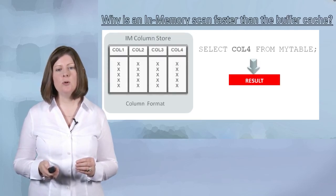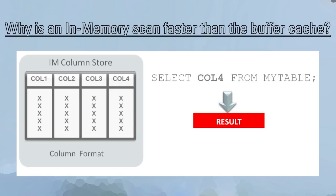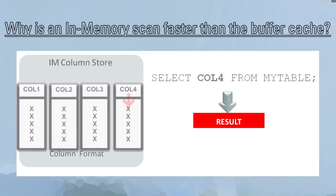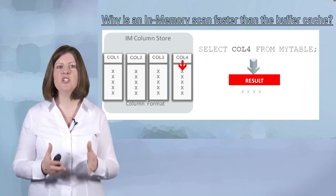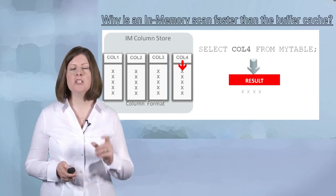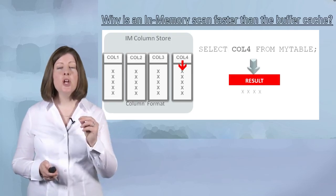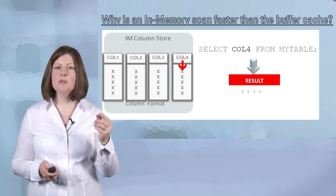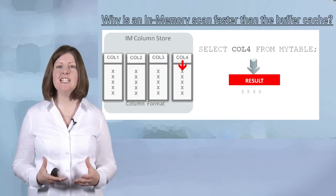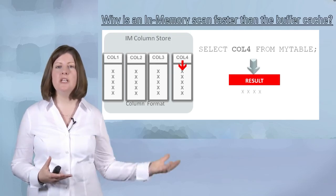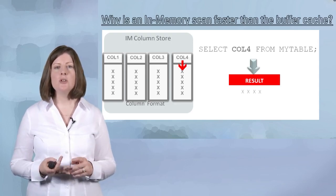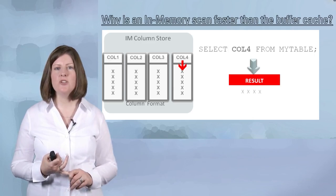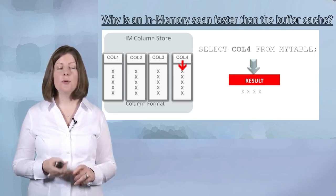If we execute the same query against the table in a column format, inside the column store each column is stored separately, so we go directly to column 4, we don't scan any additional information, and we get all the values we want directly from column 4. There's another component: the data in the column store is compressed, so the volume of data we're actually scanning in column 4 is a lot less than it would be in the buffer cache in row format. So we're getting several advantages: only accessing the data we're interested in, and accessing that data in a compressed format.